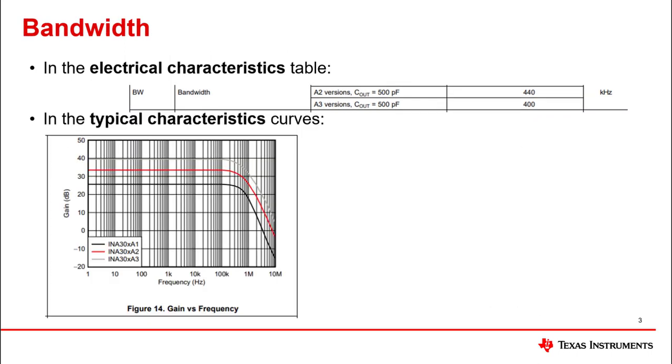First, we will focus on the bandwidth. CSAs do not list gain bandwidth product, as the system is already in a closed-loop configuration with a specific gain and it is not intended to be used with external feedback and have the gain modified. CSAs will list the bandwidth in the specification table with the 3 dB drop from the DC gain and its typical value.